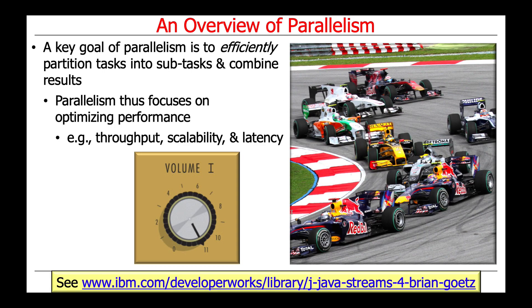The key point of parallelism is to optimize performance, and you can optimize performance along several dimensions. You can optimize throughput — how much information can you get by per unit time. You can optimize scalability — how many of something can you deal with. You can optimize latency — how long does it take to do any given thing. Different types of applications require different optimizations along these dimensions.